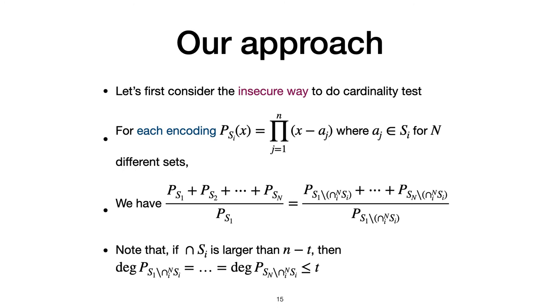For simplicity, let's first consider the insecure way of our approach to do cardinality tests. First, we use the original encoding of set, say for an N-sized set. We encode it as a polynomial. Then suppose there are N sets from s1, s2 to sN. We encode them as ps1 to psN. And if we compute the rational function ps1 plus ps2 plus psN over ps1. After canceling out common factors, the resulting rational function has degree T at most if the intersection cardinality is larger than N minus T. This actually helps us to get rid of the number of parties N in the computation.